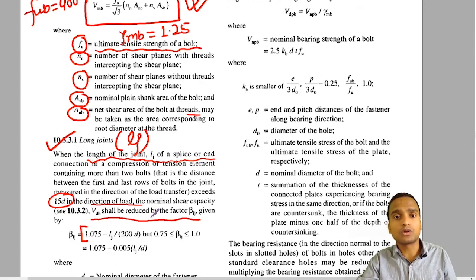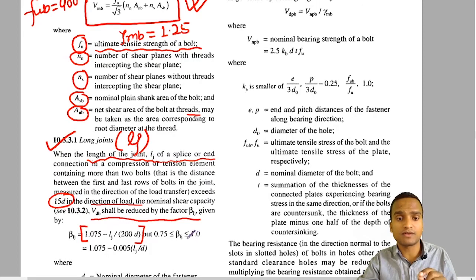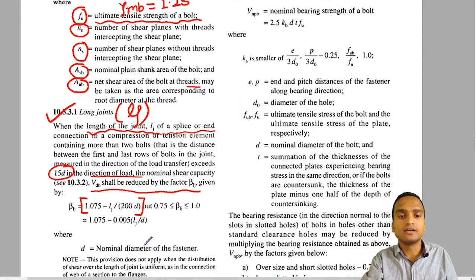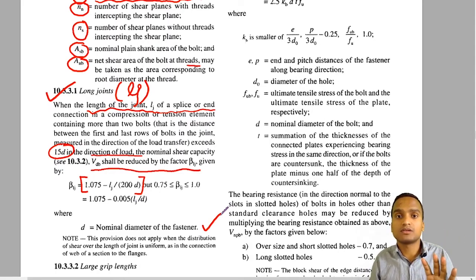This β_Lj (where Lj refers to long joint) is multiplied with Vdsb if the joint is truly a long joint. You can find these formulas in IS 800, which is usually provided in offline exams, so there is no need to memorize them.